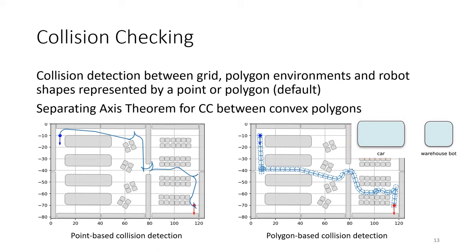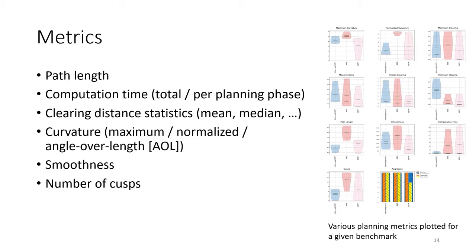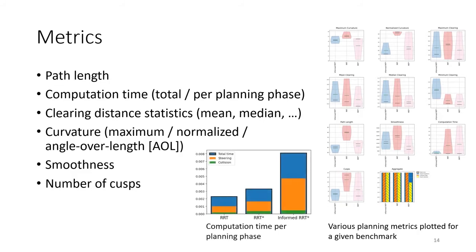Having found a solution, for each path that is processed through BenchMR, we compute a variety of metrics. Besides path quality metrics, such as path length, curvature, smoothness, and number of cusps, we also summarize the computation time by the different planning phases, such as collision detection and the evaluation of the extend functions. BenchMR is expandable by the user to support more metrics as well.